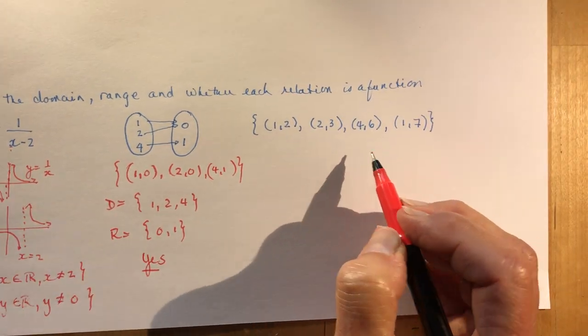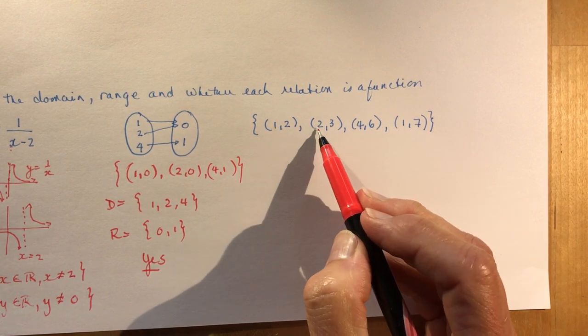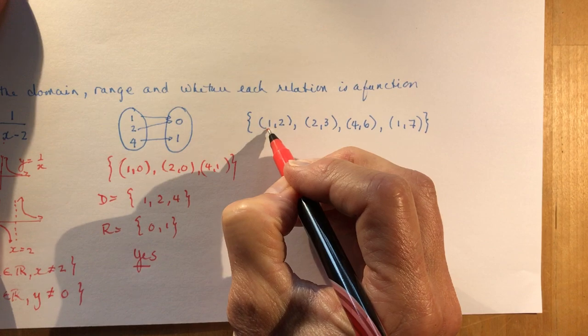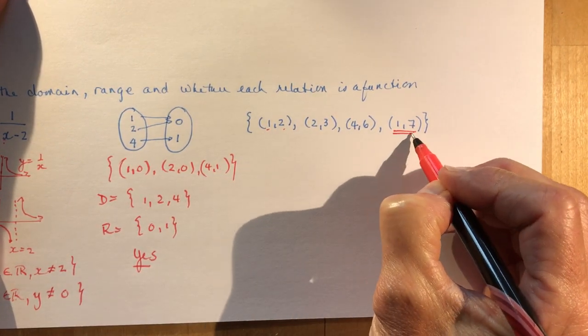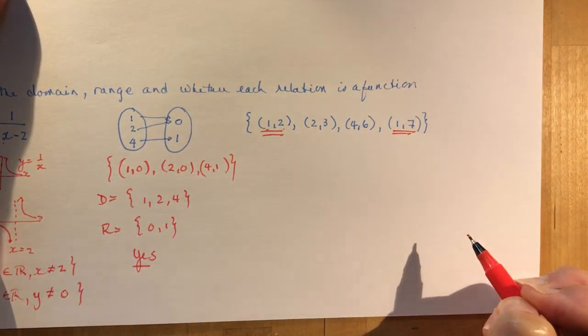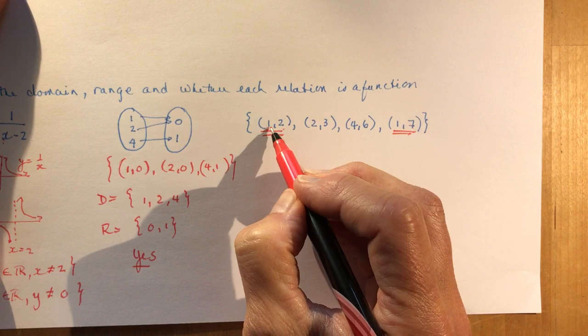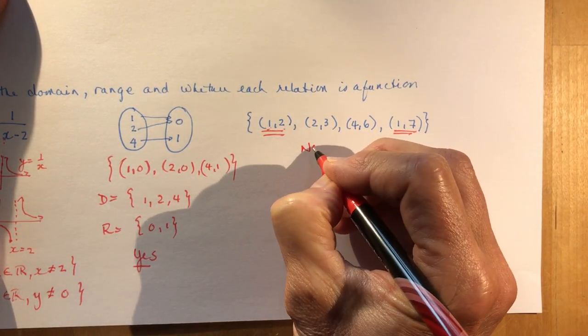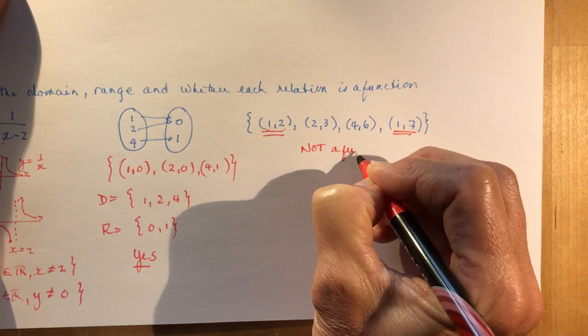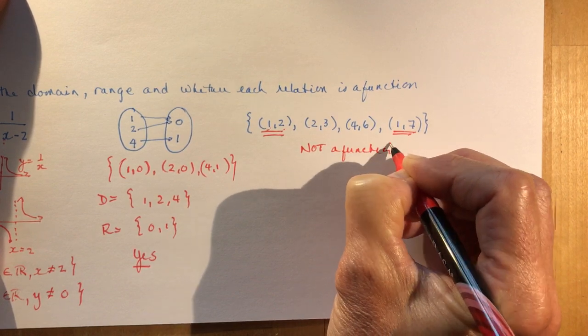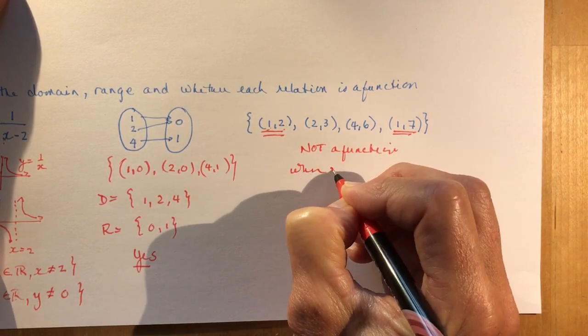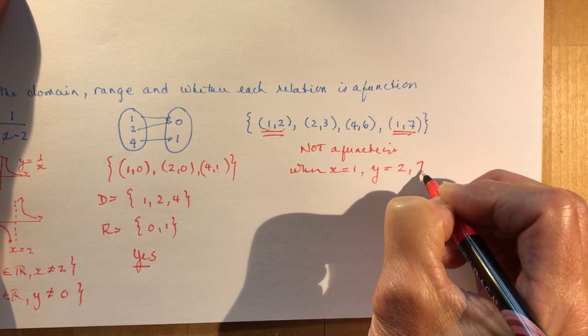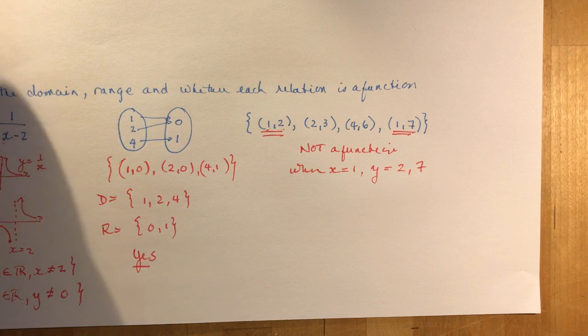Now this one, I've written out a set of coordinates. One two, two three, four six, one seven. And you should be able to spot right away that this one two and one seven, this means it's not going to be a function because this x has two values for y. Not a function. When x equals one, y is equal to two and seven.